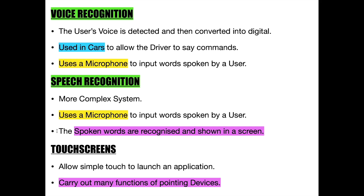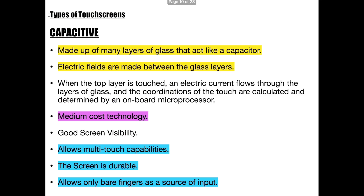Let us now go back to the discussion about input devices. The next input device is the touch screen. These types of input devices allow a simple touch to launch an application, and they are easier to use than pointing devices. There are three types of touch screens: the resistive, infrared, and capacitive touch screens.